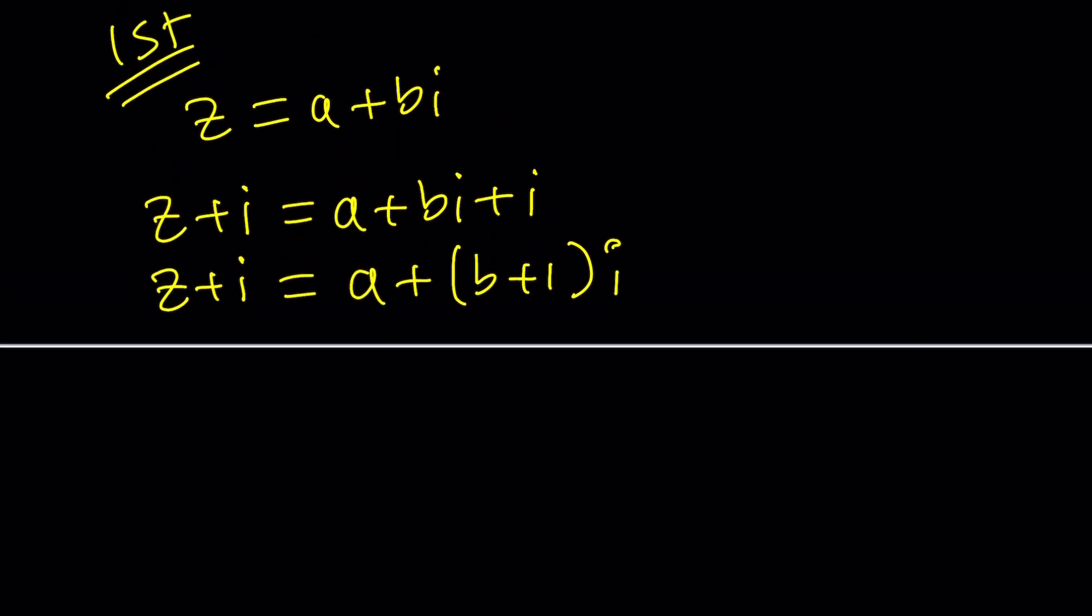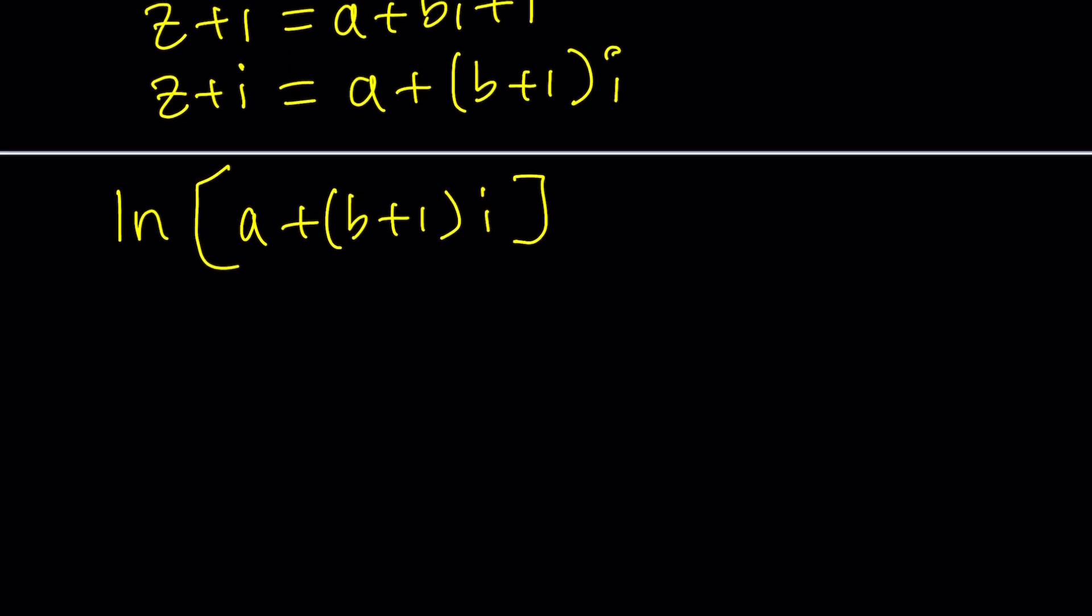So now we're going to go ahead and natural log this number in standard form. How do you natural log a complex number? It's better if it's in polar form because it's a lot easier. So let's go ahead and try to write this as r times e to the i theta. Thanks to Euler, we have something called the polar form.